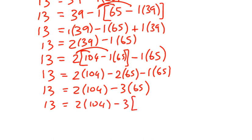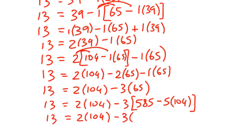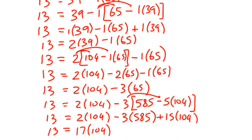65 is 585 minus 5 lots of 104, and then I need to just simplify what I've got here. I've got 2 lots of 104. Subtract 3 lots of 585. And then, watch, we've got positive 15 lots of 104. Negative 3 times negative 5 is positive 15. So, altogether, it seems that we have 17 lots of 104 minus 3 lots of 585.